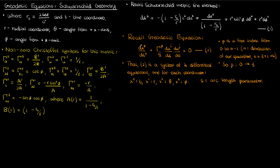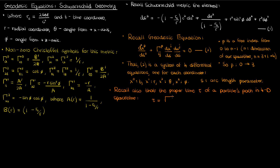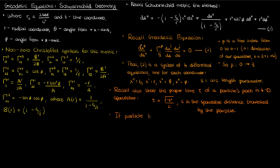Going back to special relativity, the proper time τ taken by a particle traveling along a time-like path in four-dimensional space-time is directly related to the space-time distance traveled by the particle. Here s is the arc length or space-time distance — not just a spatial distance. For an infinitesimally small interval, dτ and ds are related similarly. This is essentially the definition of proper time.